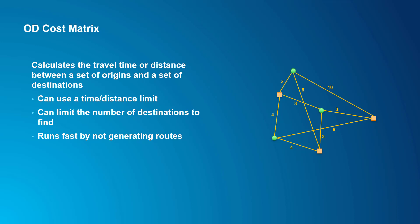Origin destination, or OD cost matrix, is used for finding travel time or distances between sets of origins and sets of destinations. It doesn't make pretty visualizations, but it provides you with numerical outputs you can use in reporting or as inputs for further analysis. An OD cost matrix can also be calculated for a specific time of day, and as we know, the travel time between each pair of points can vary considerably depending on the time of day used. In this video, we'll talk about how to handle this.